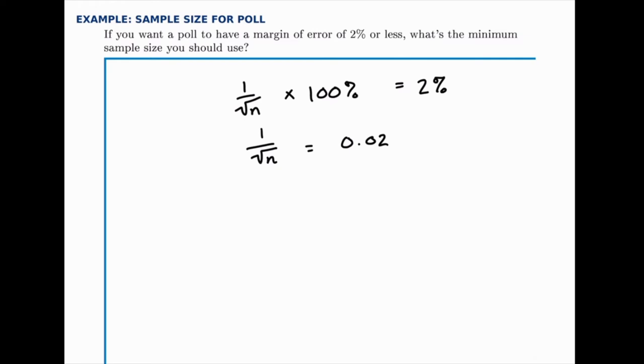Now we need to solve for n, and it takes a little bit of algebra to do so. There are a few ways to solve this. If we want to get n by itself, we could move it out of the denominator by multiplying it on both sides. So if we multiply it over there, we get 1 equals 0.02 times the square root of n.